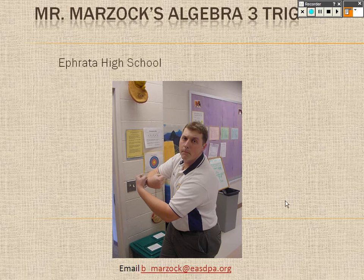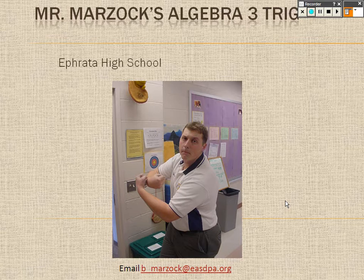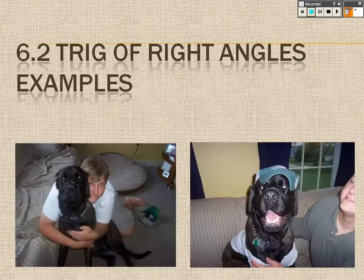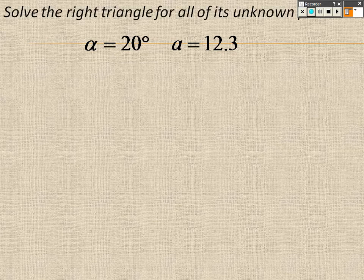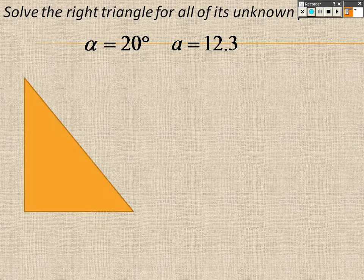All right, so we're still on 6.2 here on my triangle tree. Again, I'm going to just give you a whole bunch of examples here to solve. In this one, it says solve the right triangle for all the unknown parts.